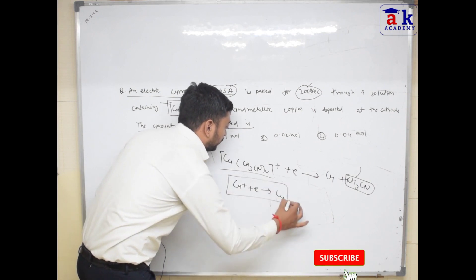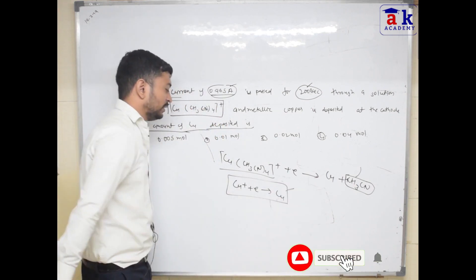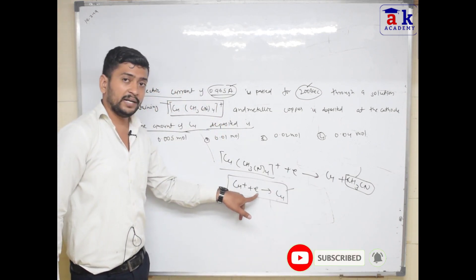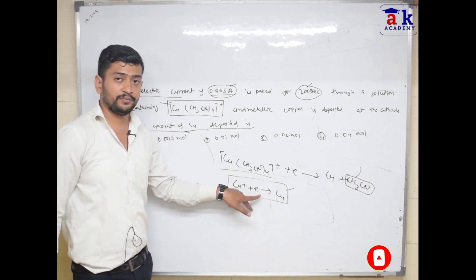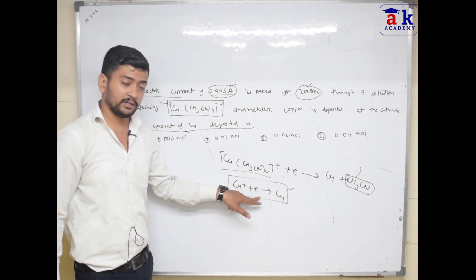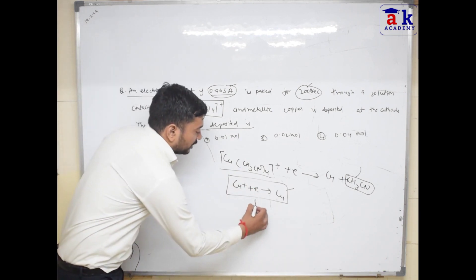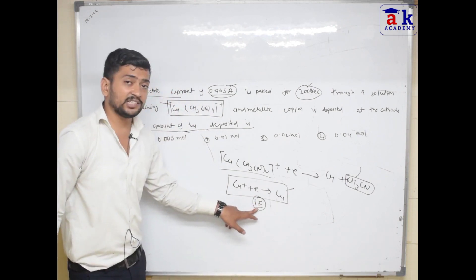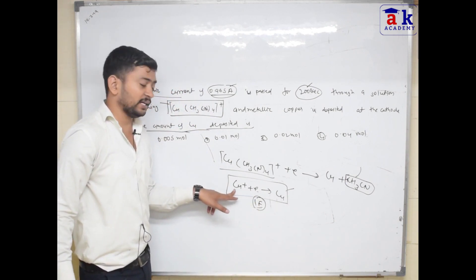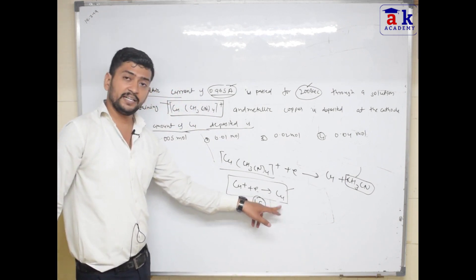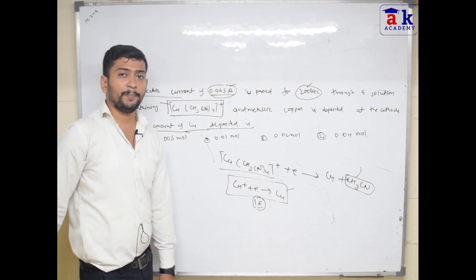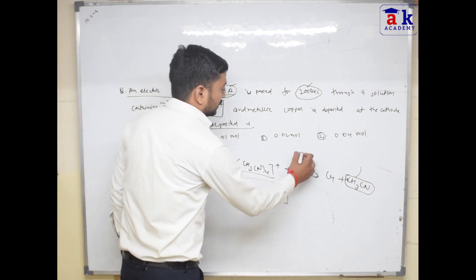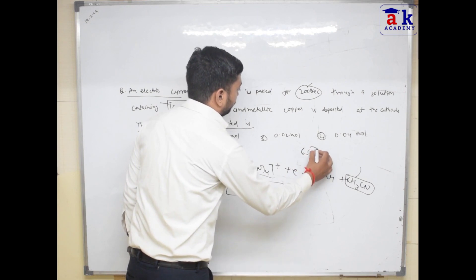Simple reaction यह है: Cu⁺ is accepting 1 electron and that is going to form Cu. Or, 1 mole of Cu⁺ will accept 1 mole of electrons — मतलब 1 Faraday charge consume करेगा Cu⁺ — तो यह 1 mole copper देगा, यानी 63.5 gram।